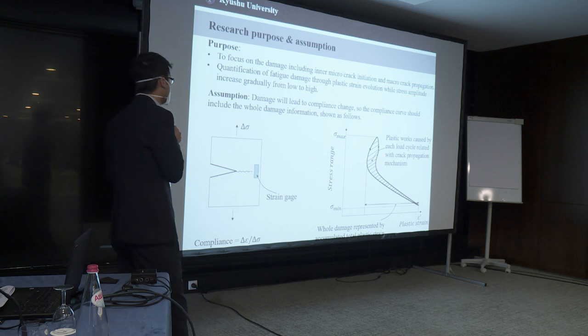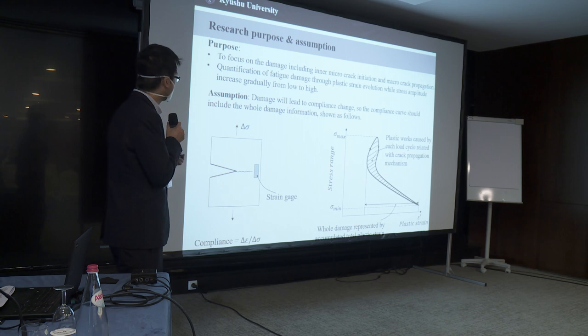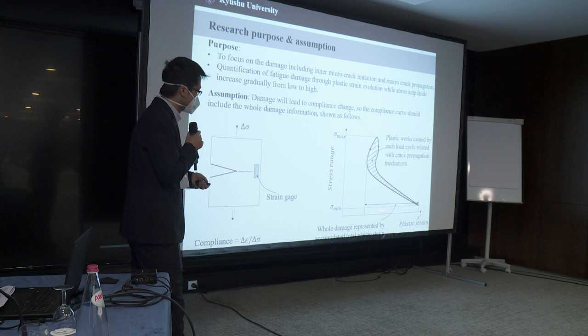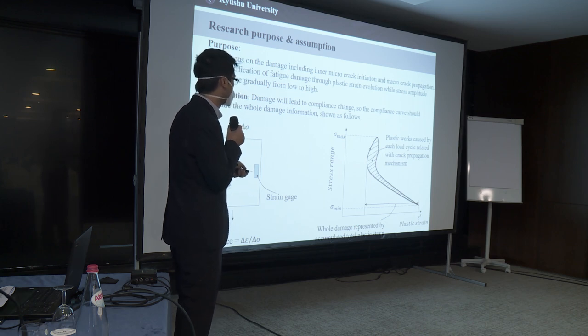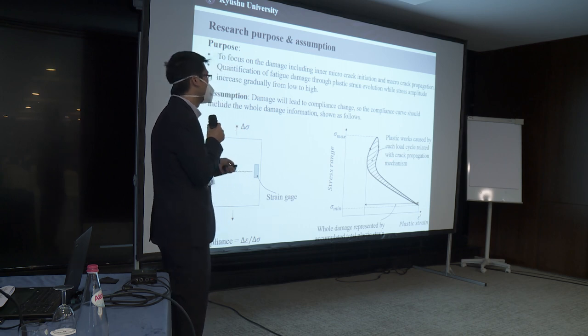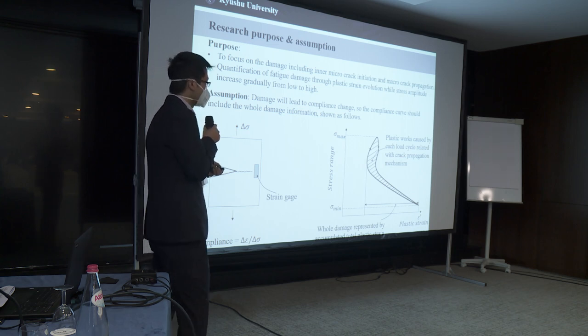And my assumption is, no matter what kinds of damage, the compliance curve should include the whole damage information. For example like this, this part should represent the whole damage by accumulating plastic strain. And the error of this compliance curve is caused by each load cycle, which I think relates to the crack propagation mechanism or crack propagation mode.